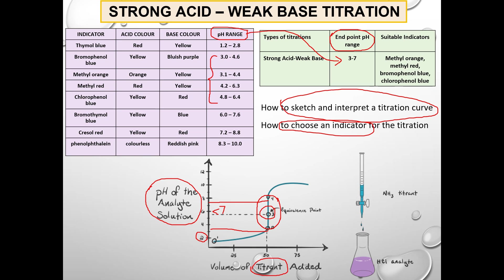There are 4 indicators that can be used for the titration between a strong acid and a weak base: bromophenol blue, methyl orange, methyl red, and chlorophenol blue. This is how you would sketch and interpret a titration curve and also choose an indicator for the titration between a strong acid and a weak base.